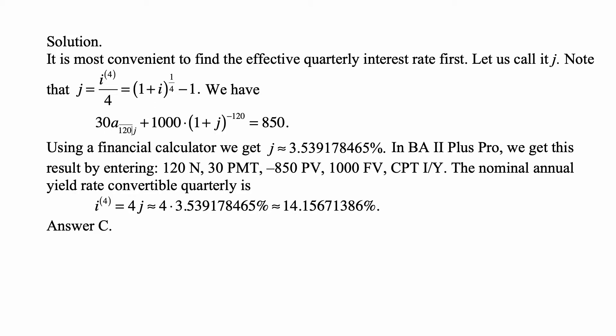30a angle 120 at j plus 1,000 times (1 + j)^(-120), that's basic bond formula for the price of a bond, and that's equal to 850.